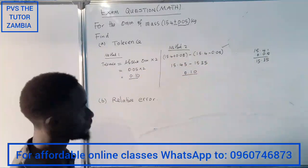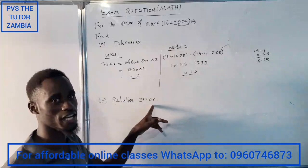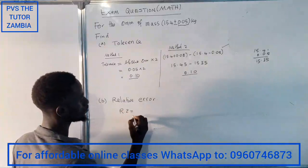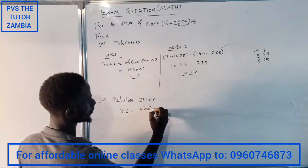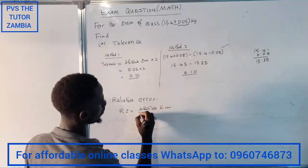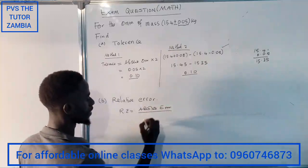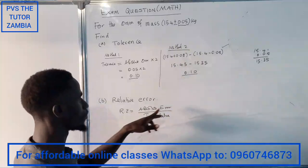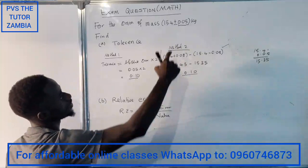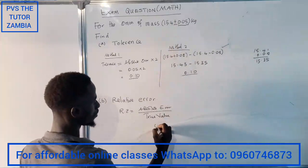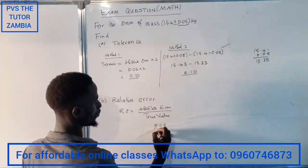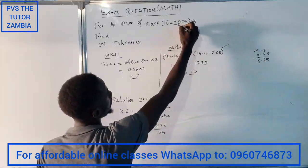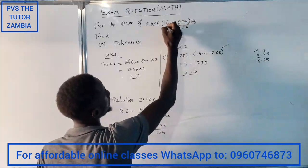Finally, the relative error. The relative error is equal to the absolute error divided by the true value. Our absolute error is 0.05 and the true value is 15.4. So the relative error equals 0.05 divided by 15.4.